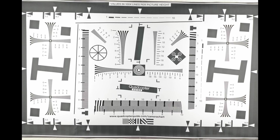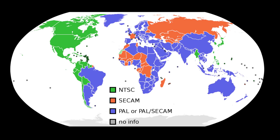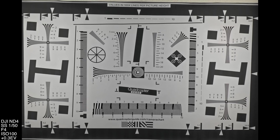Starting with the black-and-white test chart: here's the control image taken with the standard UV filter that comes on the Mavic 2 Pro — it's a little bright, metering at +2 EV. I'm located in Germany, so my goal is to shoot video at 1/50th of a second shutter speed. Here the ND4 from DJI looks just fine.